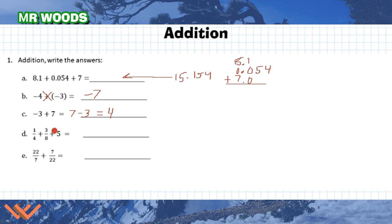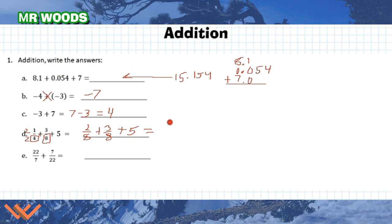When we're adding fractions, we need to add by the same denominator. Notice here we have 4 and 8. The common denominator is going to be 8. I would multiply the top and bottom of the first fraction by 2, giving me 2 over 8 plus 3 eighths plus 5. That gives me 5 eighths plus 5, which we write as 5 and 5 eighths. That's in its simplest form because 5 cannot go into 8.